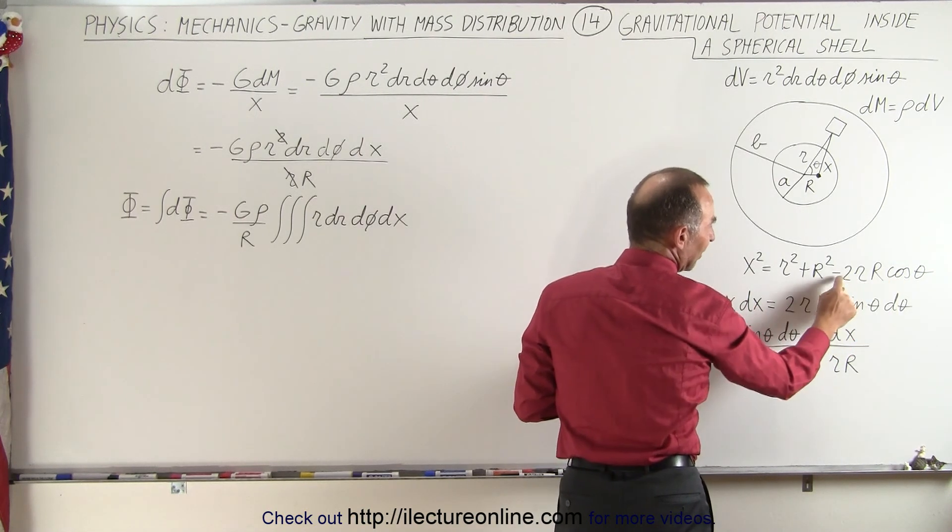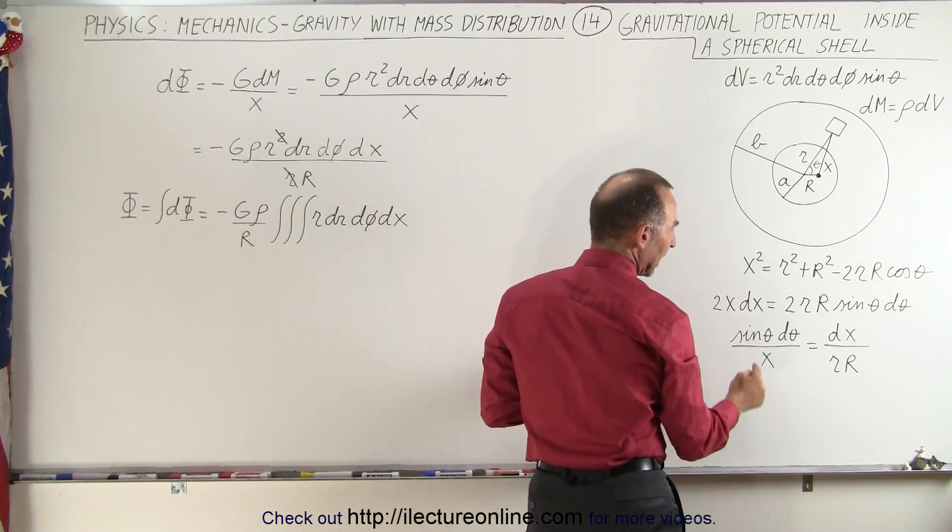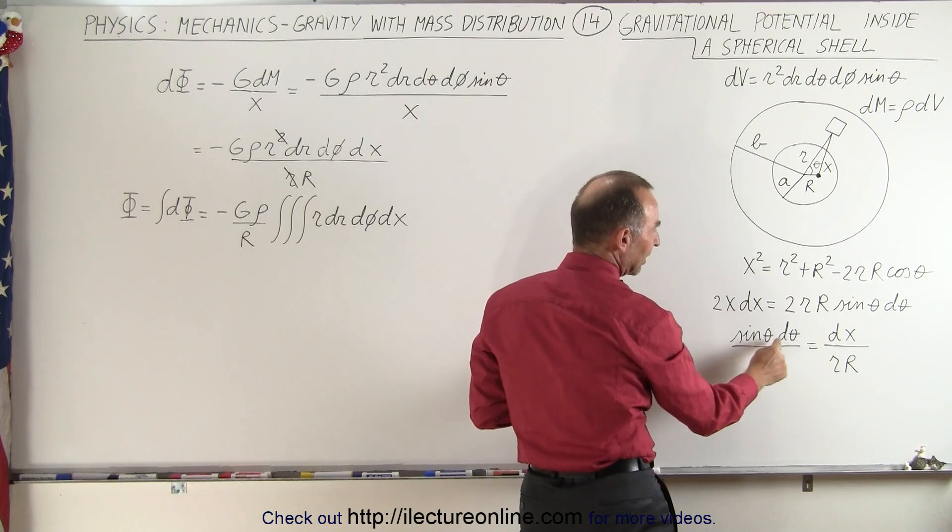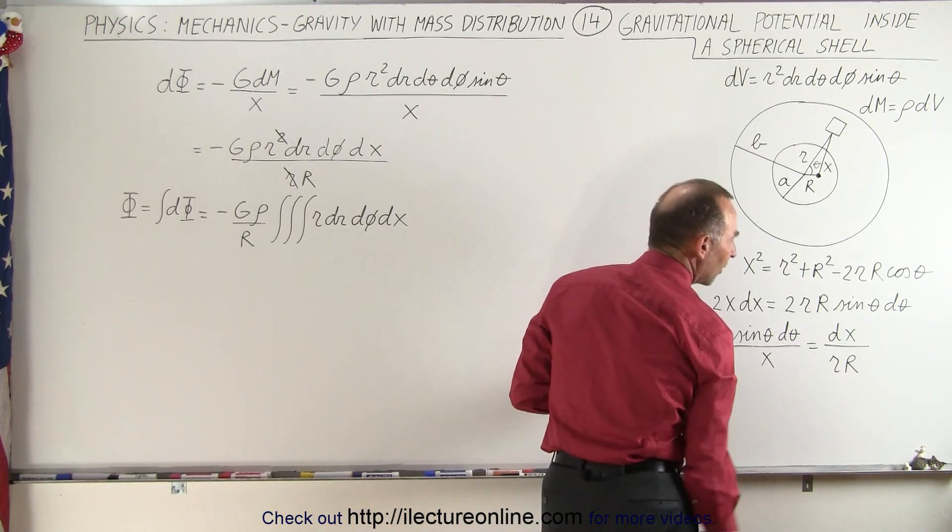The derivative of the cosine is the negative sine that gets rid of this. These are considered constant so they disappear, and then we're going to write the sine of theta d theta over x as being dx over r times capital R.